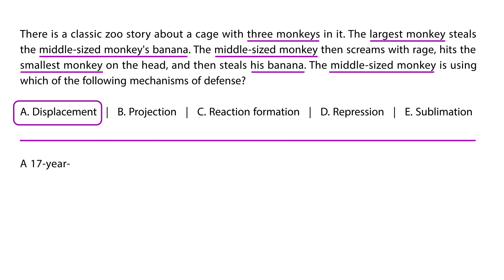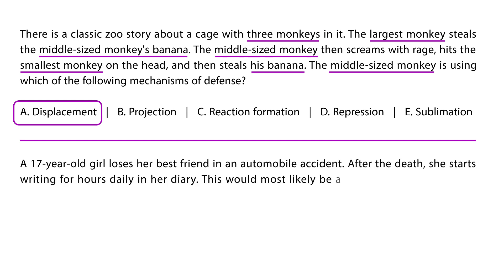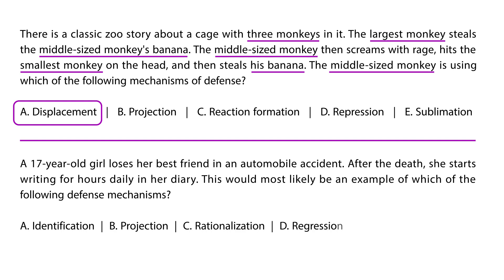Finally, a 17-year-old girl loses her best friend in an automobile accident. After the death, she starts writing for hours daily in her diary. She is traumatized — her best friend, similarly aged, has died. She channels this very undesirable event into something more positive by writing for hours daily in her diary, which helps her cope. This is a positive defense mechanism known as sublimation.